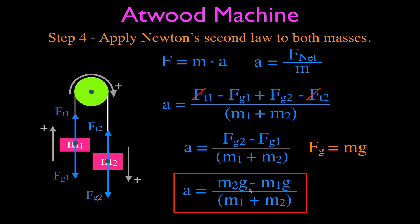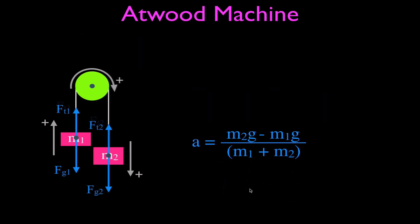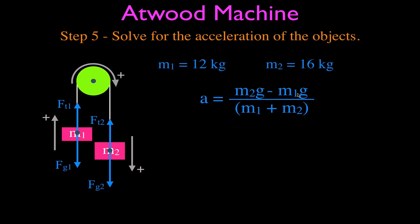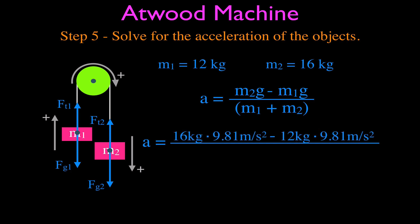Now we plug the values in. G = 9.81, M2 = 16 kg, M1 = 12 kg. The acceleration is (16 × 9.81 − 12 × 9.81) / (16 + 12). Make sure to add the two masses in the denominator before dividing. The result is 1.4 m/s². Remember, both masses have the same acceleration because they're connected by an inelastic string over a massless frictionless pulley.